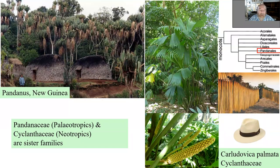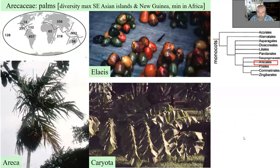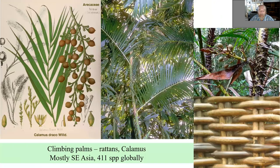Pandanales: we have Pandanus in the paleotropics and Cyclanthaceae as a sister group in the neotropics. This is how Pandanus looks. Then Carludovica palmata of Cyclanthaceae, whose fiber is used to manufacture Panama hats. Then we are in Arecales — palms. This is the global species diversity; the maximum is in Southeast Asia, mostly because of climbing palms or rattans, which have speciated especially in Southeast Asia. They are useful for furniture manufacturing but not so useful when walking through the forest, because they have spines and can make vegetation very hard to penetrate.